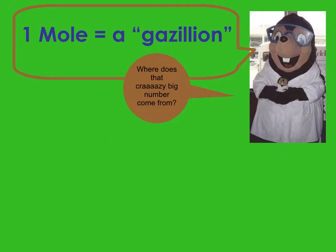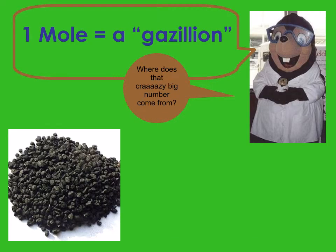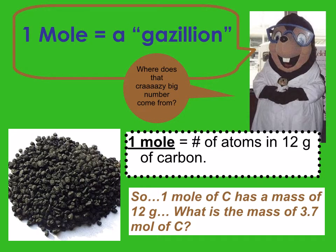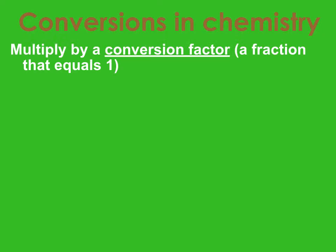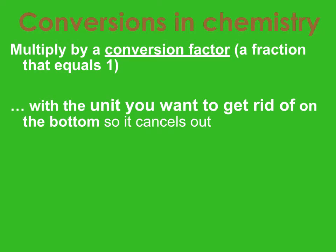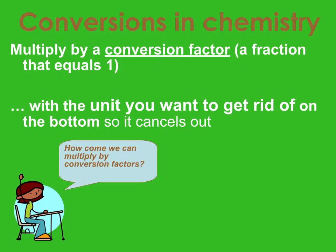One mole is this huge number — where does that come from? It's the number of atoms that are in 12 grams of carbon, and it's also the number of atoms in 14 grams of nitrogen. We use conversions in chemistry, which you've also seen — that's what our performance task is about.